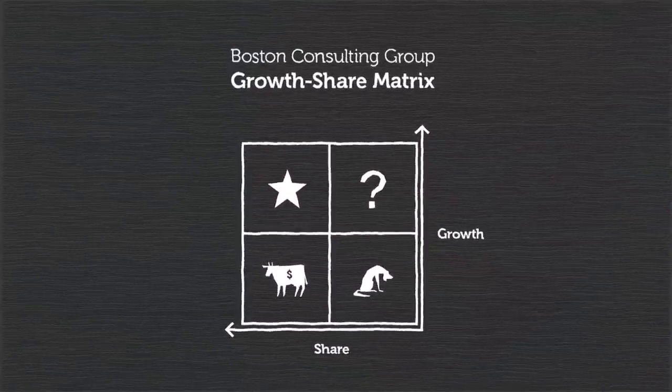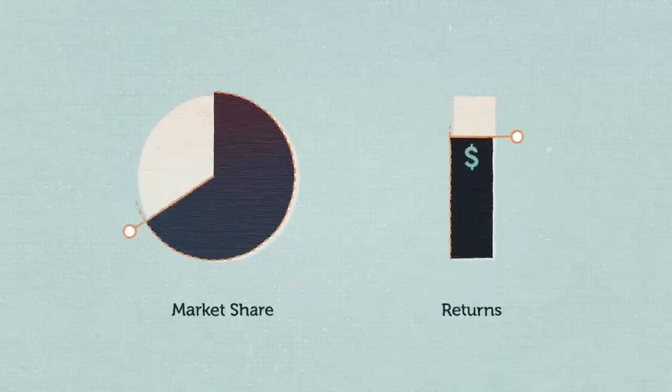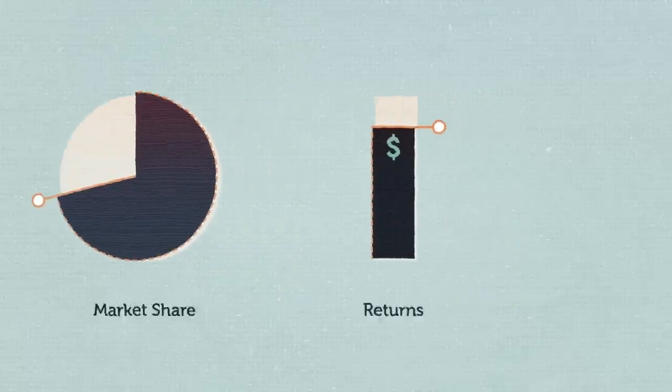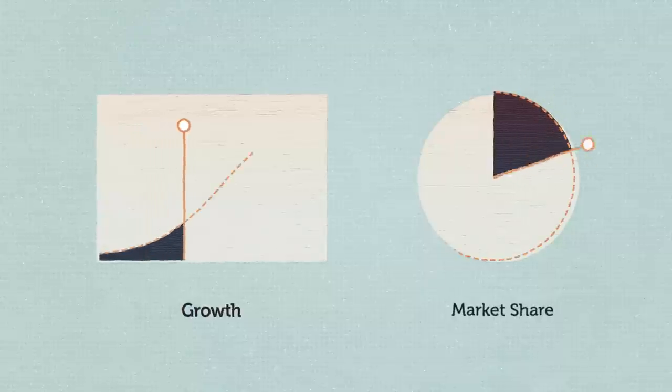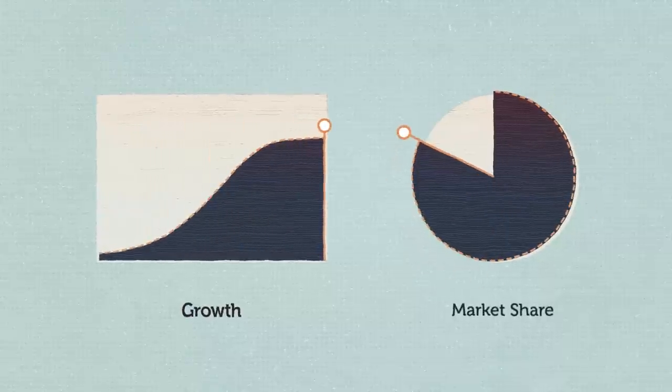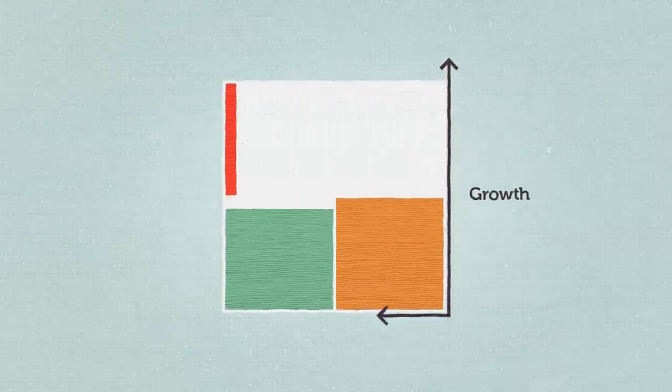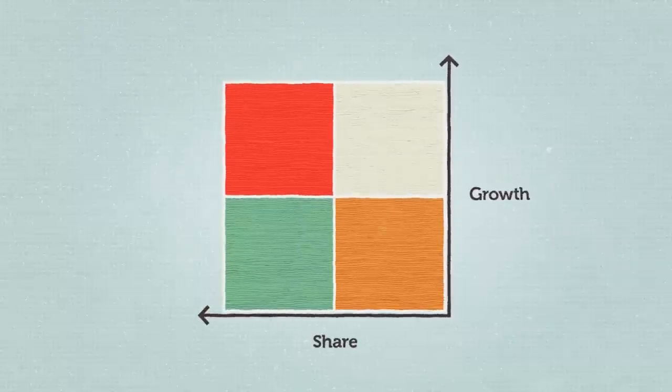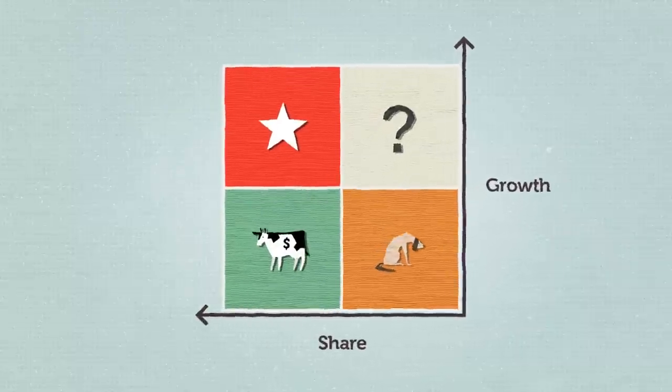The matrix was based on two principles. High relative market share businesses or products typically yielded superior returns, and high growth rates indicated markets where leadership should be built. Plotting growth rates against market share relative to competitors yielded the four quadrants of the growth share matrix.